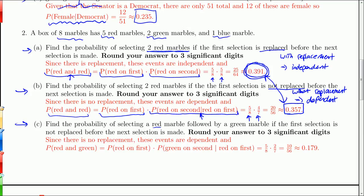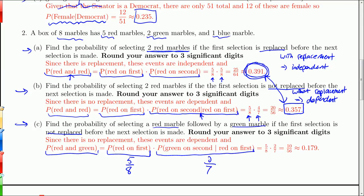Now we want a red on the first followed by a green, with no replacement — so dependent events. The probability of red is still 5/8. For the green on the second given red on the first, there are still 7 marbles left and still 2 greens, giving 2/7. Multiplying those together gives 0.179.